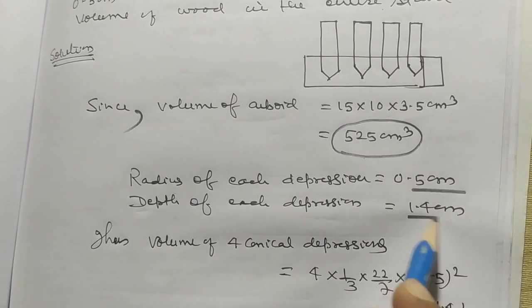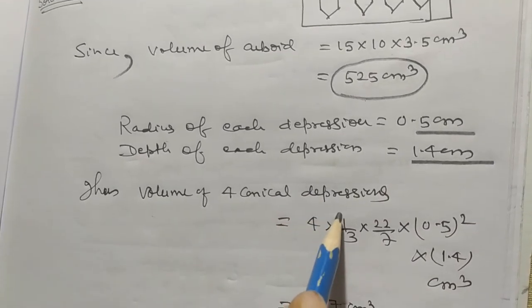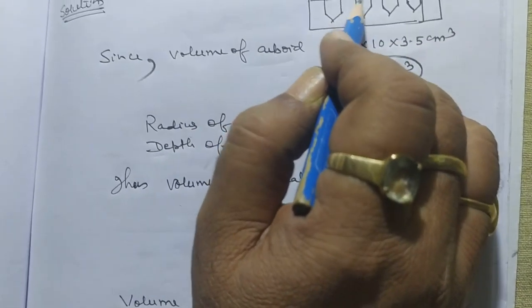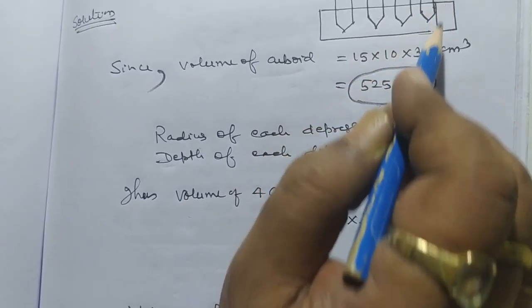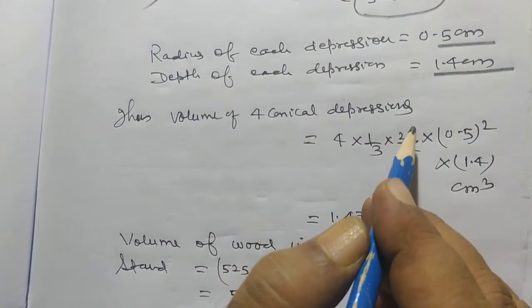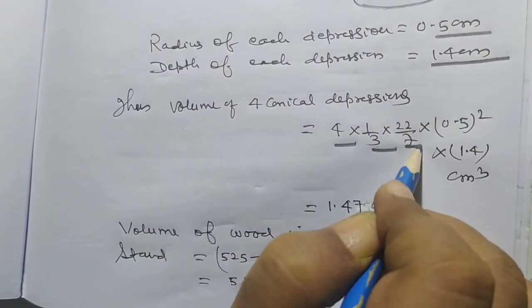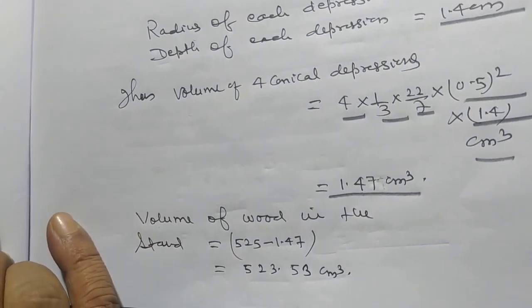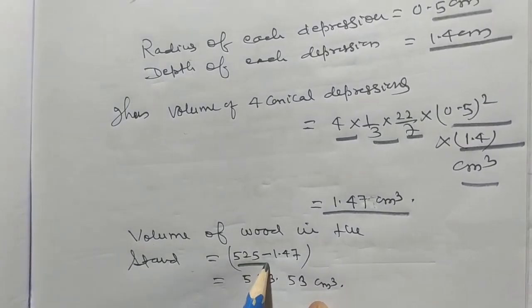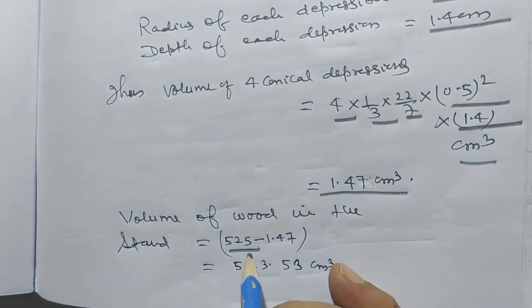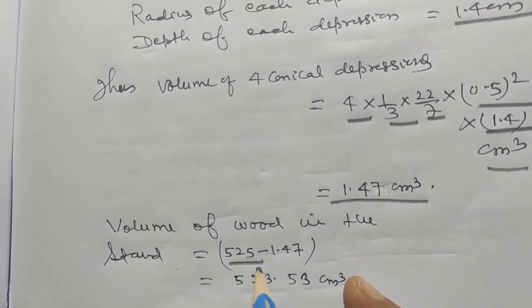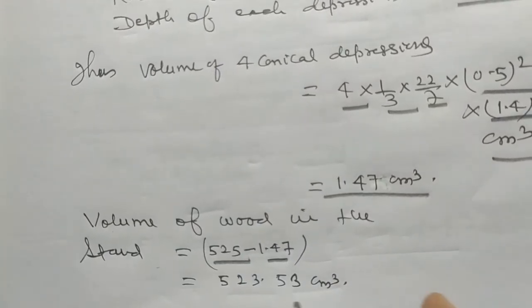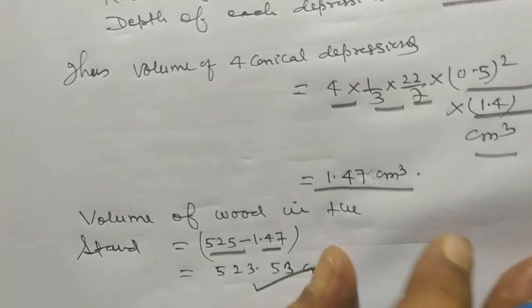Find the volume of wood in the entire stand. Volume of cuboid equals fifteen into ten into three point five, that is five hundred twenty-five centimeter cube. Volume of four conical depressions equals four into one by three pi r square h, that is one point four seven centimeter cube. Volume of wood equals volume of cuboid minus volume of four conical depressions, giving five hundred twenty-three point five three centimeter cube.